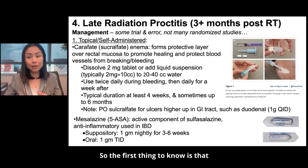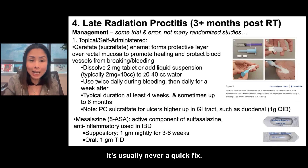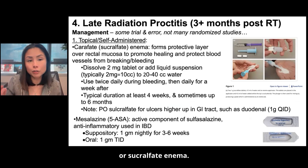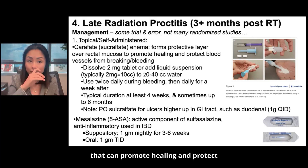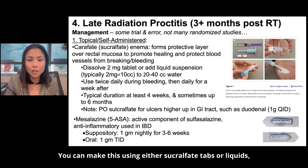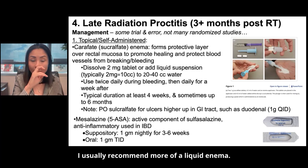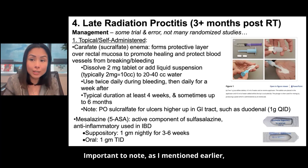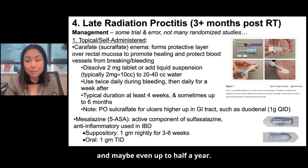How is chronic proctitis managed? This is going to take some trial and error — it's usually never a quick fix, and there are not a lot of randomized data comparing different strategies. The first thing we go to is a Carafate or sucralfate enema. That forms essentially a coating over the mucosa that can promote healing and protect blood vessels from breaking. I usually recommend a liquid enema, used twice a day during bleeding and then daily after. Important to note: a patient may need to do this for a month or even up to half a year.